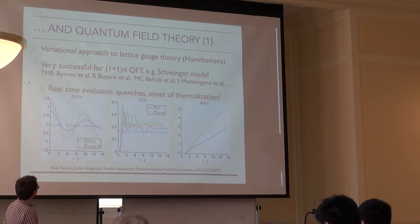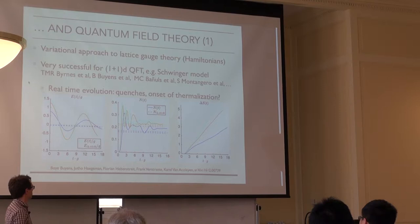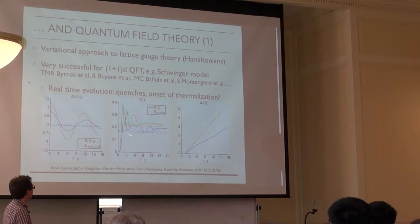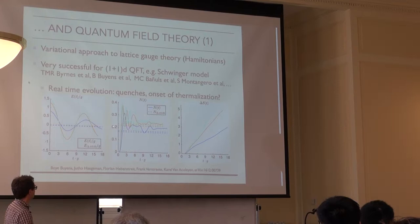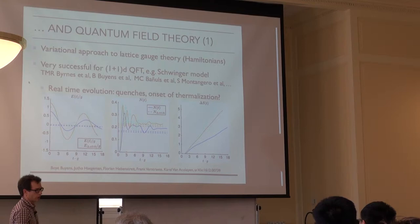This is evolution with a time-independent Hamiltonian. There is no integrability, so you expect thermalization to happen. The dotted lines are estimates for the equilibrium value of a thermal state with the same energy as the initial state. For the times reachable with the simulations, the system has certainly not thermalized yet, but it seems to be going in the right direction.